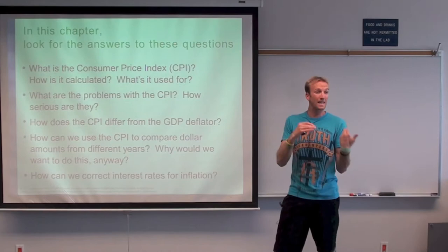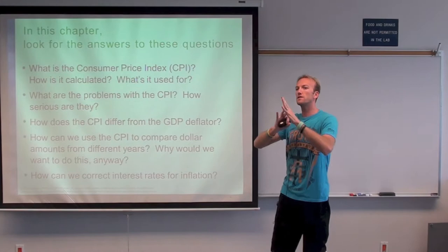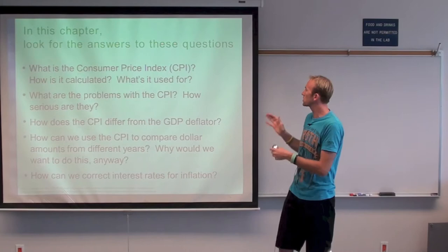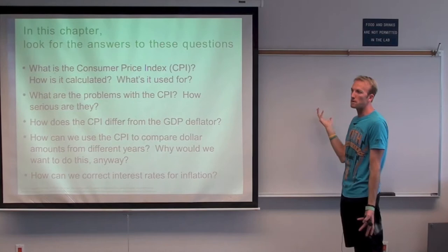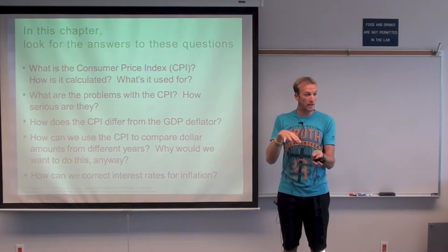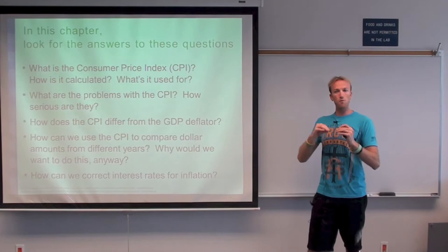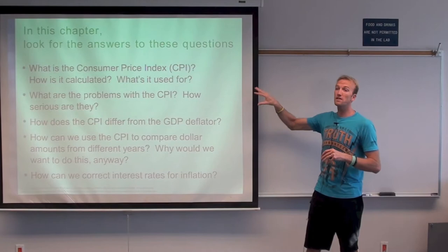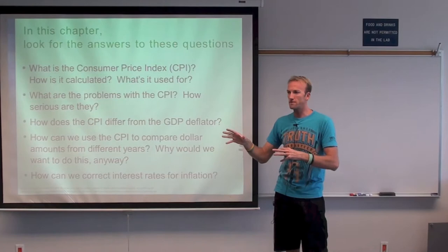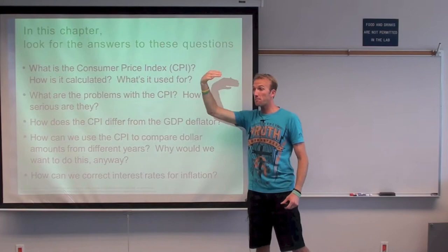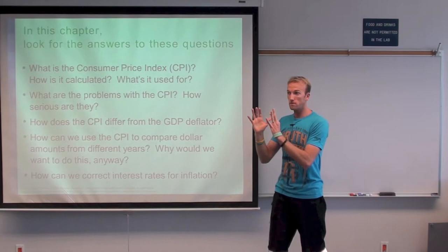We measured the productivity or the number of products produced in a country, because that's also equal to the amount of income that people make. The circular flow diagram tells us that however much goods and services are made ends up being how much income people get. In that chapter, we talked about the GDP deflator, which was a measure of the price level. Now we're going to have a whole chapter devoted to how prices change.